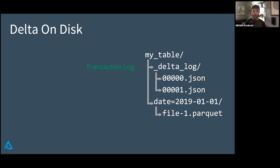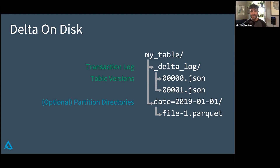We also have optional partition directories — I say optional because all of the partitioning is actually handled by our transaction log. You can do exotic things like spread all of your Parquet files out by random partitions if you're trying to optimize performance on S3. But by default, for compatibility with other systems, we will still create those partition directories. Inside them we have data files, which are just standard Parquet that can be read with any system that supports Parquet.